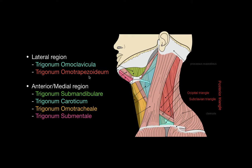If we start with the trigonum homo clavicula, you can kind of see the borders already. This is the inferior belly of the homo hyoid muscle, then you have the sternocleidomastoideus and the clavicula — that's going to be the trigonum homo clavicula.